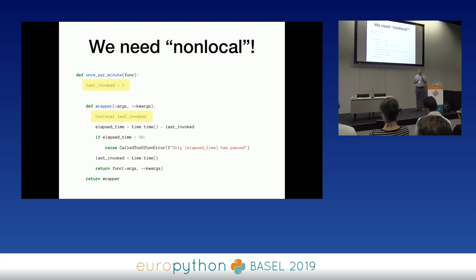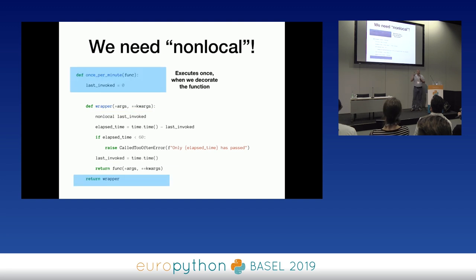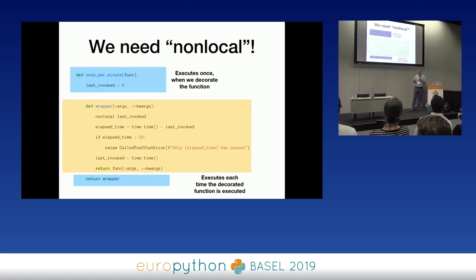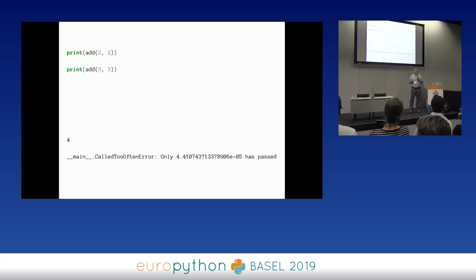I say 'nonlocal last_invoked', and that nonlocal statement means whenever I say last_invoked equals something, I'm affecting that variable in the outer scope. We run the decorator once on the outside but many times on the inside — that's the division of labor. When I run add(2, 2), I get four. When I immediately run add(3, 3), I get a 'TooOftenError'. So this actually works.